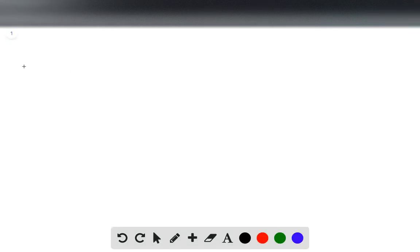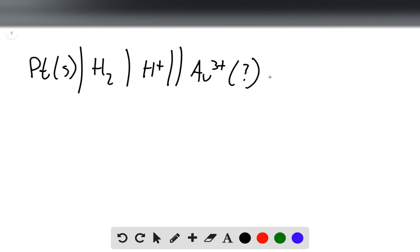So in this problem, we're given the line notation: Pt(s) | H2 | H+ || Au³⁺ (unknown concentration) | Au. Over here is our anode, and over here is our cathode.